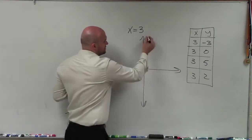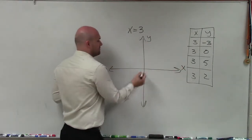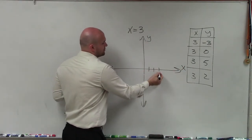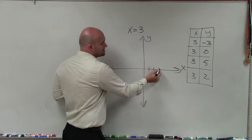So if I plot, well, here's my y-axis. Here's my x-axis. So if I plot x equals 3, 1, 2, 3, right? And now I just plot, well, there's 3, 0.